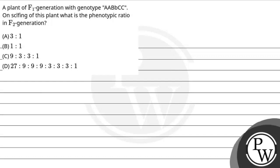Let's read the question. A plant of F1 generation with genotype capital A capital A, capital B small b, capital C capital C — on selfing, which is the phenotypic ratio in the F2 generation? The options are: first, 3:1; second, 1:1; third, 9:3:3:1; and last, 27:9:9:9:3:3:3:1.